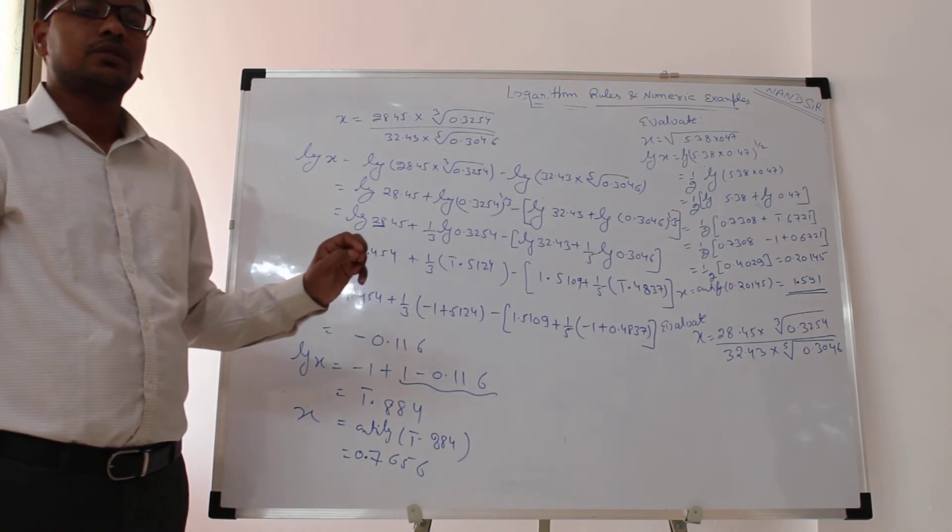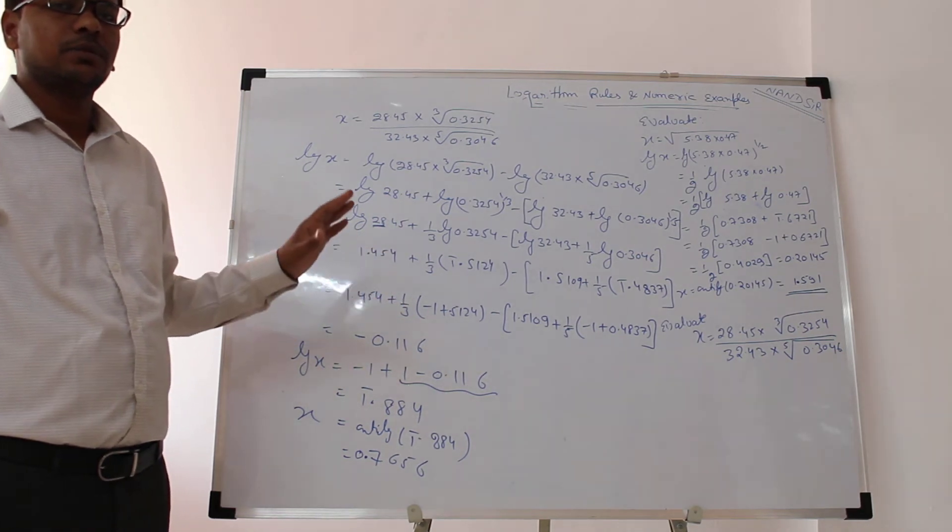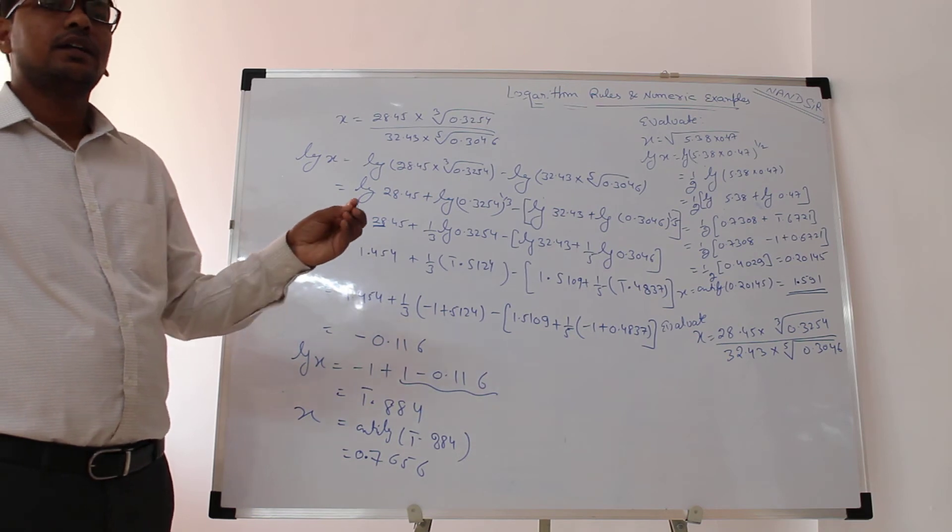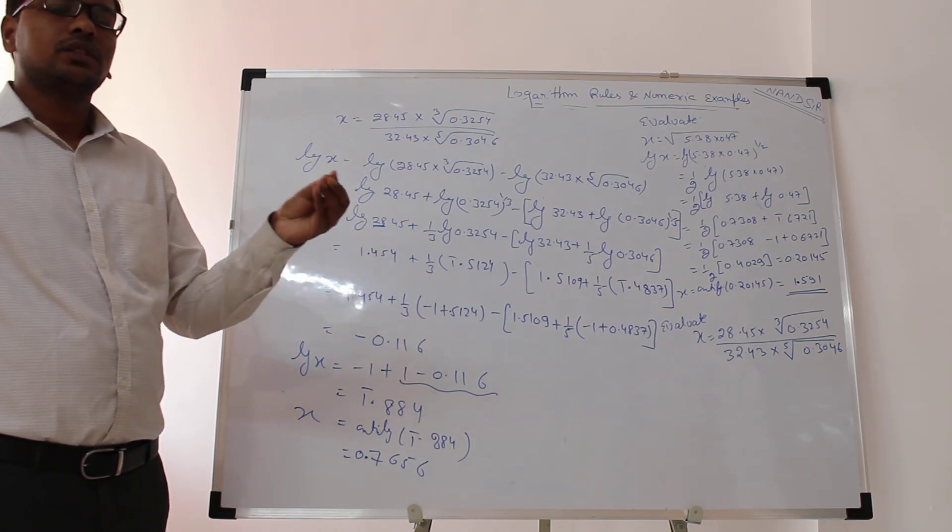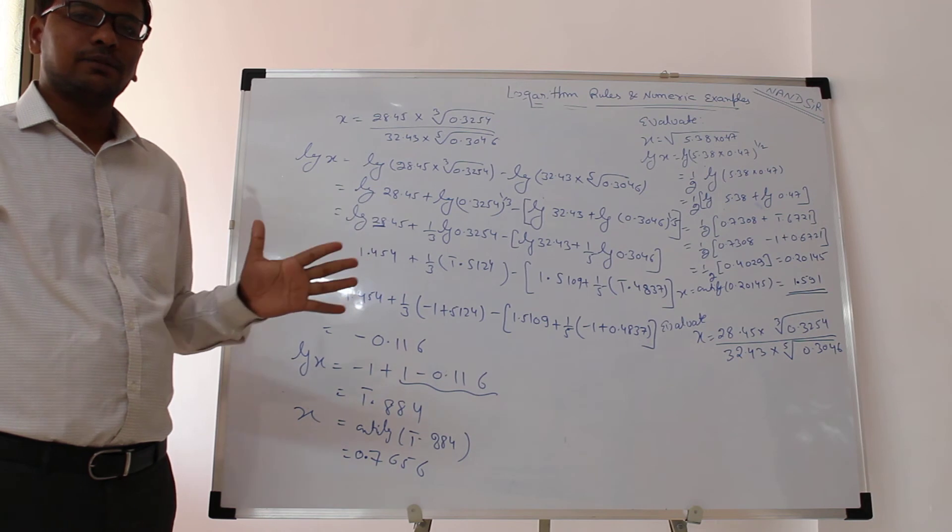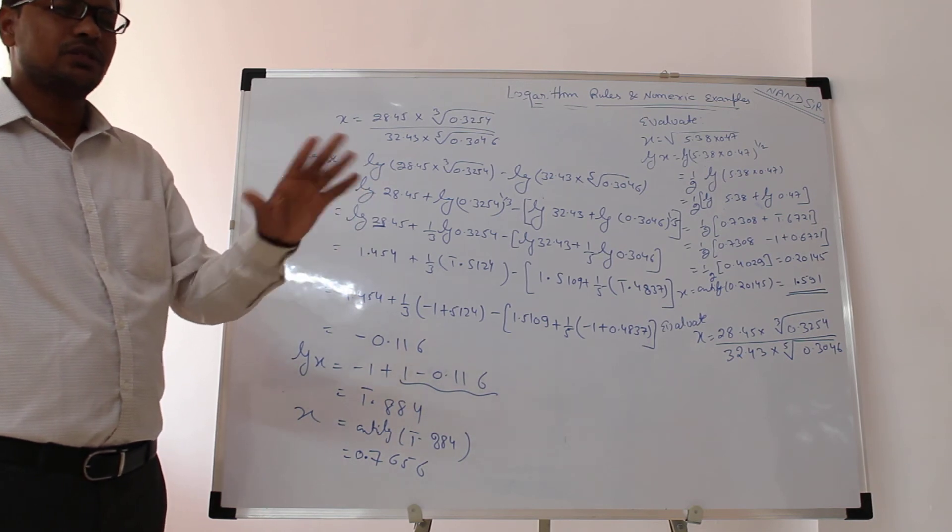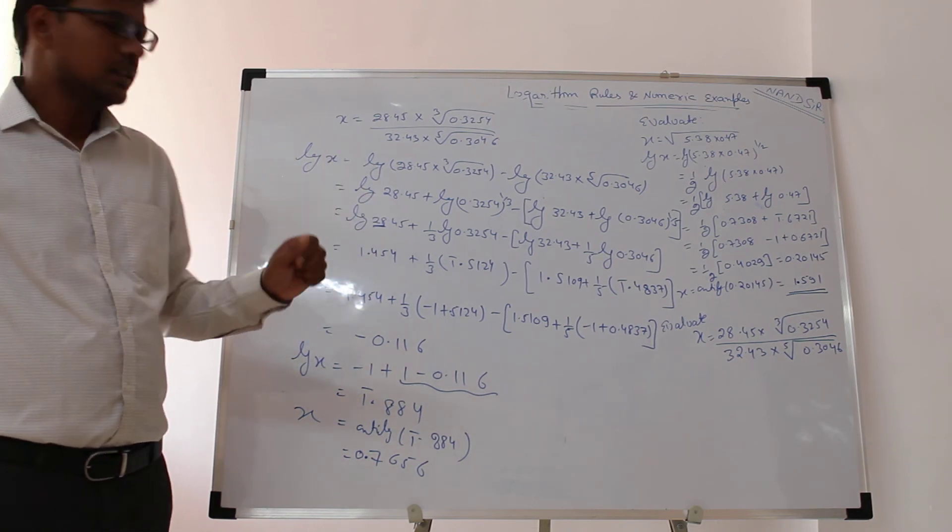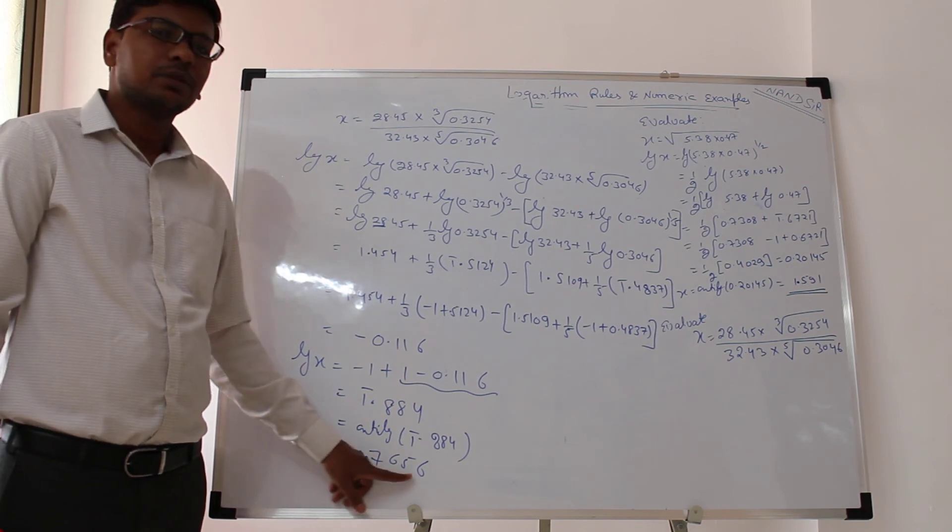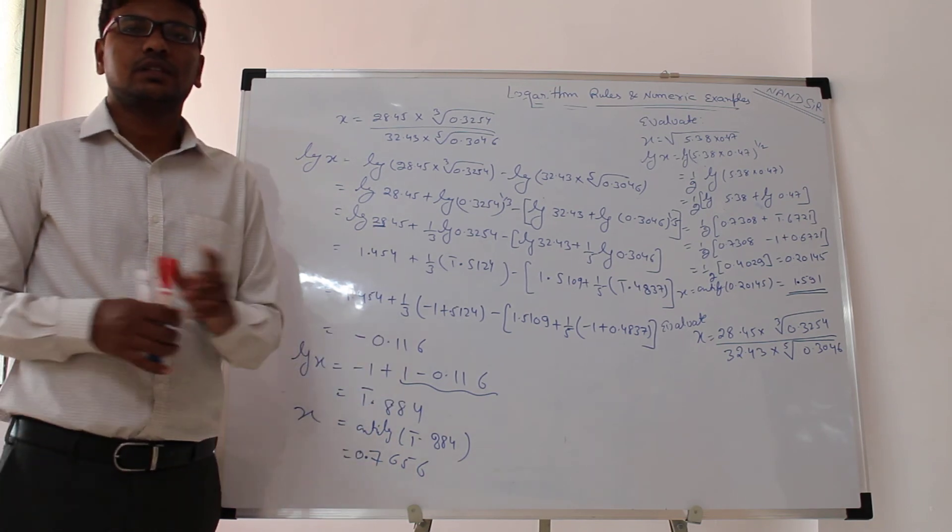Because in the market, different types of tables are available—on the base of 10, on the base of e—and even on the same base, we are getting different values. So don't worry about that. It will give you approximate answers. Okay? Fine. Thank you.